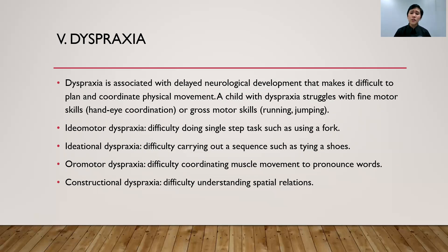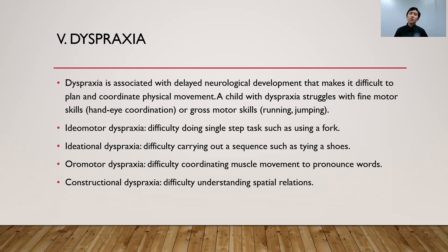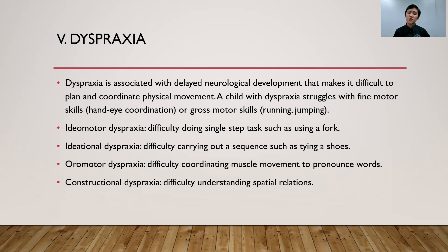Next, the oromotor. When we say oromotor, it's about the muscle movement needed to pronounce words. Their muscles cannot move properly, and there is no progress in their muscle development. That is why they cannot pronounce words. You may notice some children who cannot immediately pronounce words even when they are already at the right age. And lastly, constructional — when we say constructional, it's about their spatial relations and how their overall body functions.